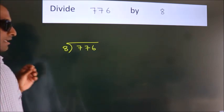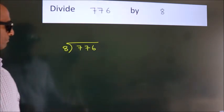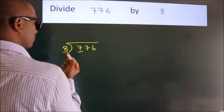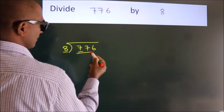This is your step 1. Now, next. Here we have 7. Here 8. 7 smaller than 8. So, we should take two numbers. 77.